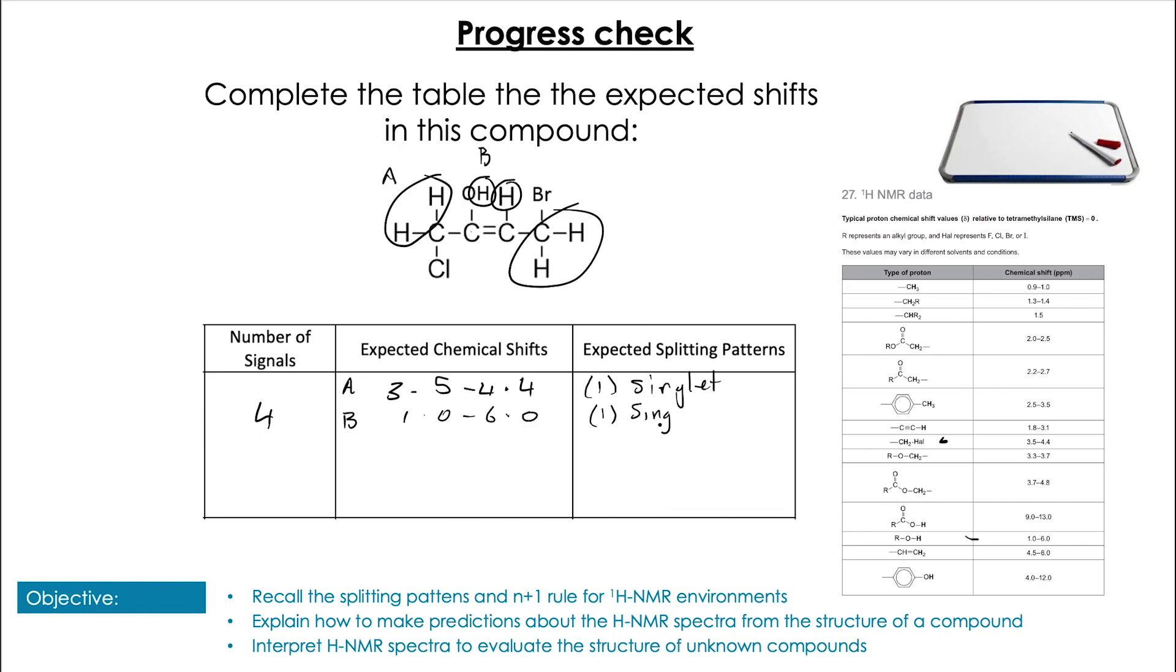The third hydrogen or environment C here is on a double bond, so we're going to see a shift of between 1.8 and 3.1. Now it is next to, in two bonds, to two hydrogens, so n+1 tells us that we're going to have a splitting of three here, and that's going to be a triplet. And lastly we see the hydrogens attached to the carbon with the bromine, so we see the same expected shifts for halogen that we saw for the A environment, 3.5 to 4.4, and these ones are next to one hydrogen. And n+1 we would expect a doublet.